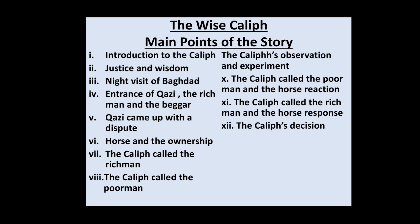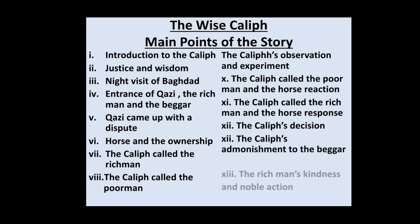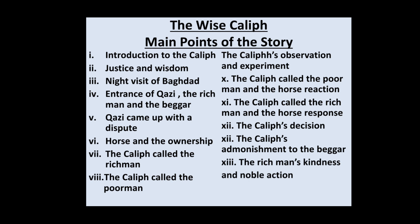After the experiment, the Caliph's decision came. He declared the horse belongs to the rich man and ordered it returned to its true master. The Caliph then turned to the beggar and said: 'You are a liar and a wicked man. You tried to rob an honest and respectable person. You deserve severe punishment.' The Caliph admonished the beggar, but the rich man, being a good person, took pity on him, gave him a purse of gold coins, and this act was liked by everyone in the court.